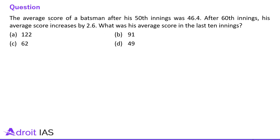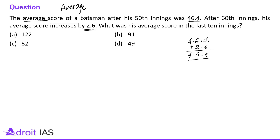Next question: the average score of a batsman after the 50th innings was 46.4. After the 60th innings his average score increased by 2.6, so his average becomes 49. What was his average score in the last 10 innings? In the last 10 innings, he scored 49 runs per inning plus 2.6 runs distributed to the first 50 innings as well.